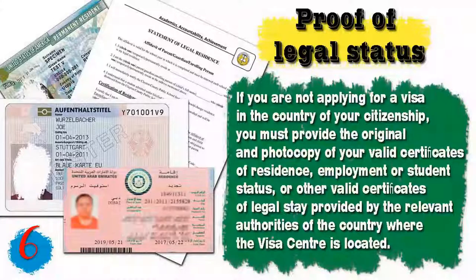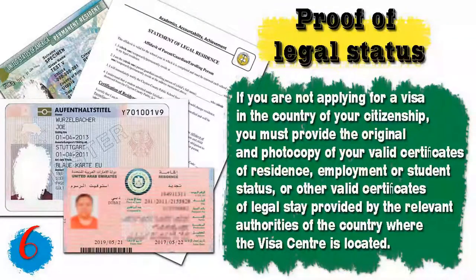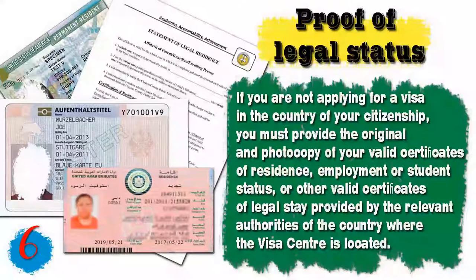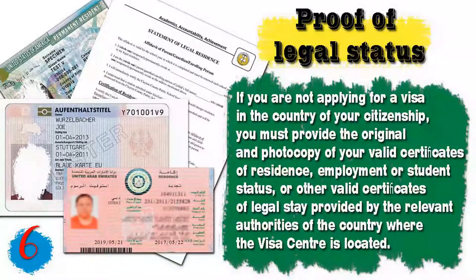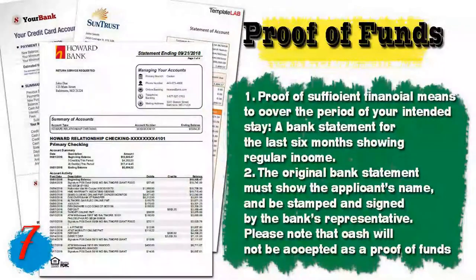Document six applies to foreigners. If you are not applying in your country of citizenship, you must provide the original and photocopy of a valid residence permit, employment certificate, student status certificate, or other valid certificate of legal stay issued by the relevant authorities of the country where the visa center is located.